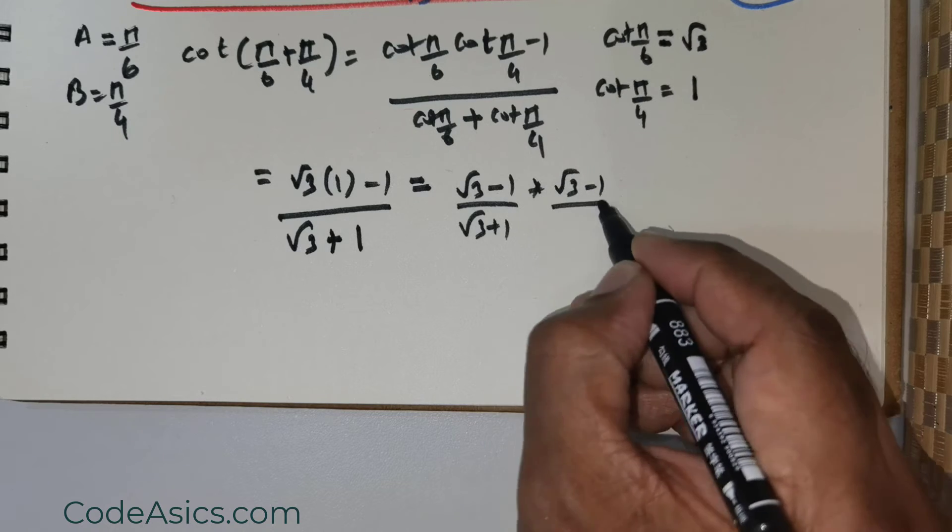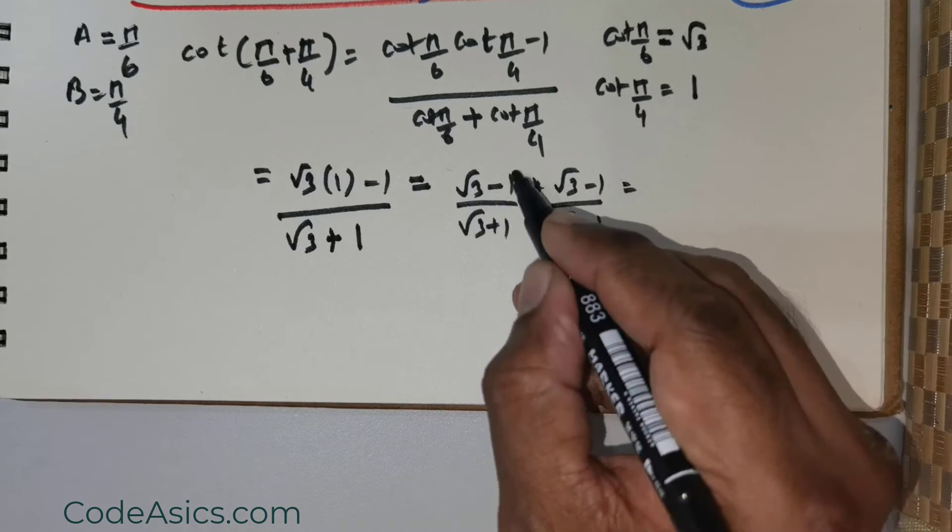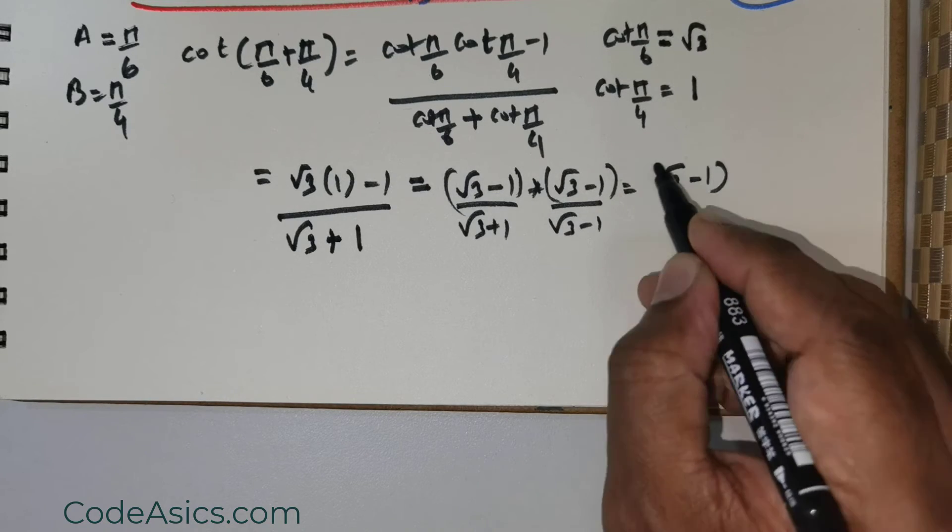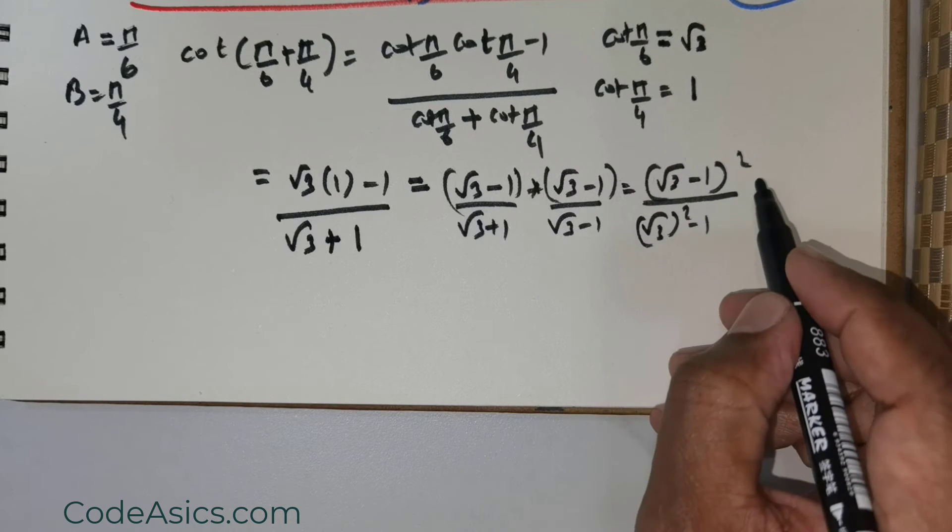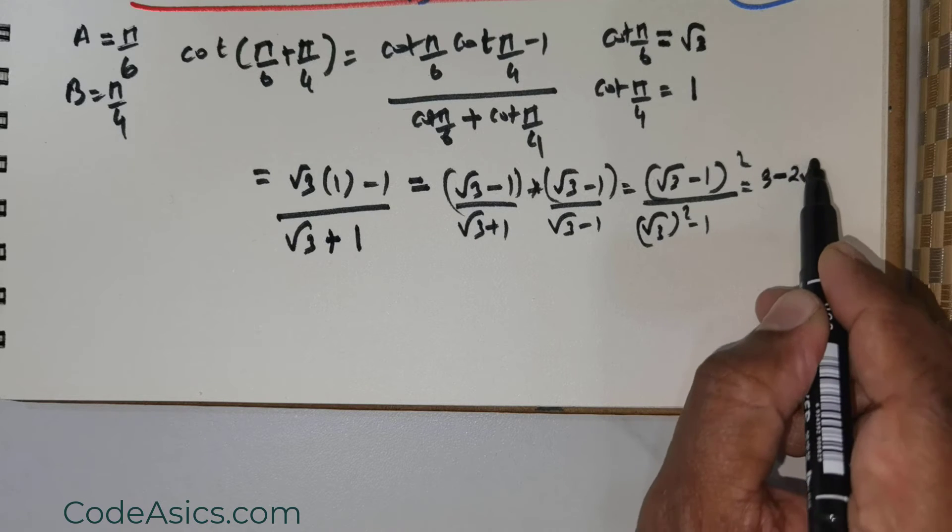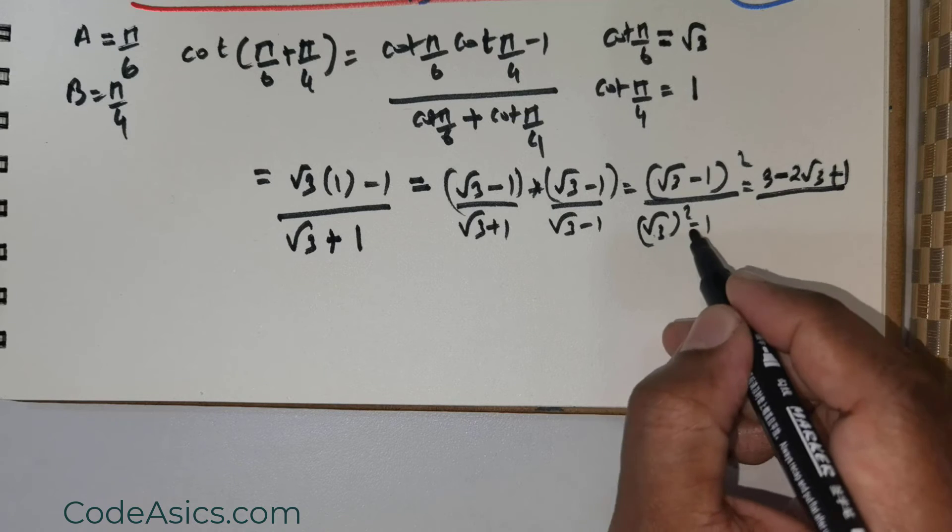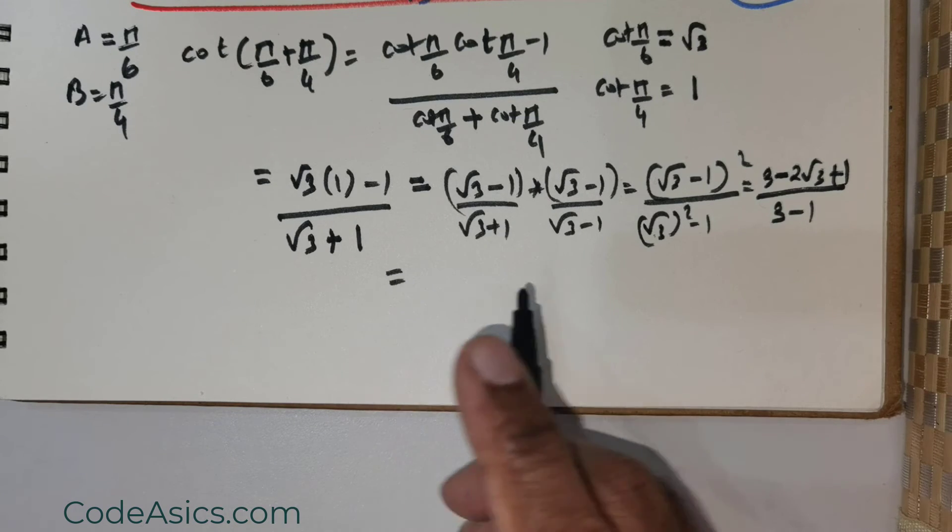Now I would like to multiply by (√3 - 1) and divide by (√3 - 1). So this is going to be (√3 - 1)² over the denominator. This would give me (√3)² - 2√3 + 1 if I were to expand this, divided by (√3)² - 1, which is 3 - 1.